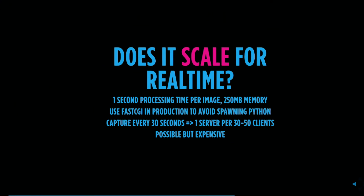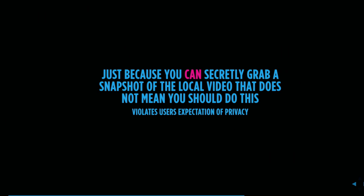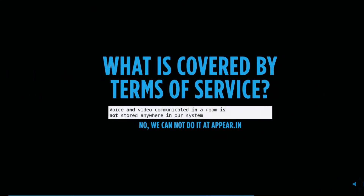How do you actually use it — does it scale for real time? We've seen it takes one second processing time per image and 250 megabytes of memory. In production, you would use FastCGI to avoid the overhead of spawning a Python process. If you capture only every 30 seconds, you need one server per 30 to 50 clients — it's possible, but pretty expensive. And just because you can secretly, without telling the user, grab a snapshot from the local video doesn't mean you should, because that would totally violate privacy expectations. Our terms of service state that voice and video in a room is not stored, so we cannot do that for legal reasons.